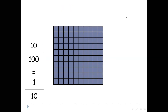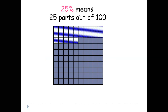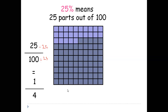For the next question, 25 percent means 25 parts out of 100. We shade 10 and 10 and another 5, so we get 25 in all. As a fraction, that's 25 over 100. To find the simplest form, we divide 25 by 25 and 100 by 25. When you divide them by 25, you get 1 out of 4. So 25 percent is actually 1 over 4.